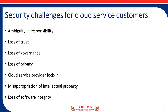The fourth challenge is Loss of Privacy. A CSC's privacy can be violated due to the leakage of private information while the CSP is processing it, and due to the privileges that need to be given to the CSP. The CSP may use private data for a purpose that the CSP and CSC haven't agreed upon.